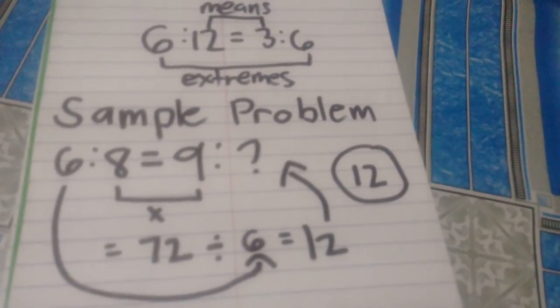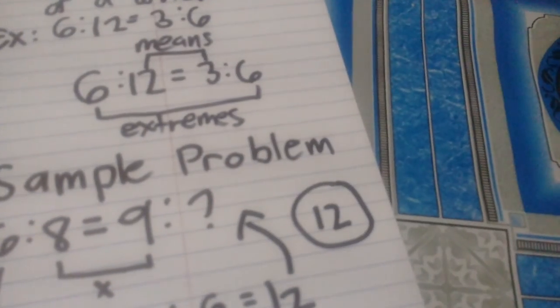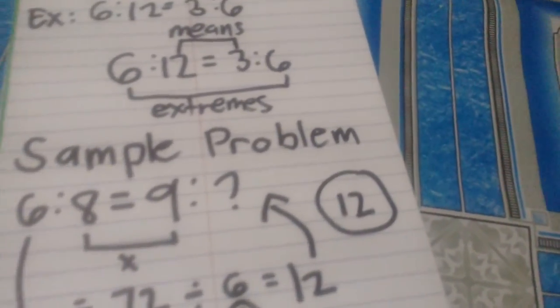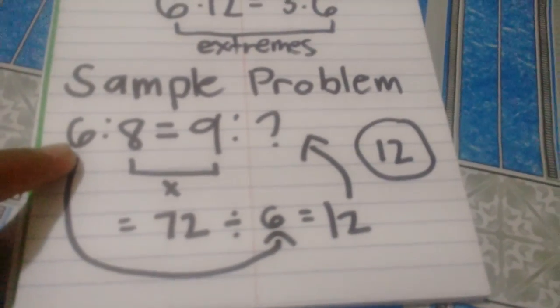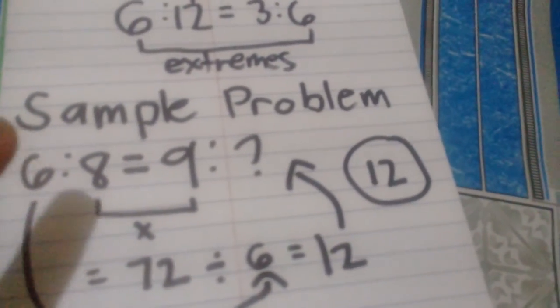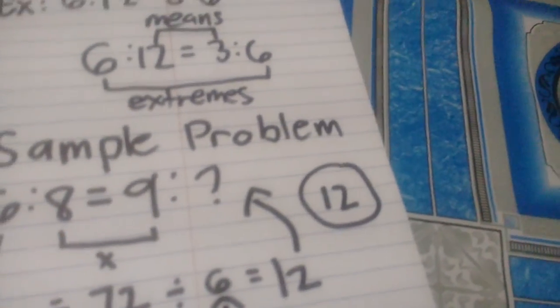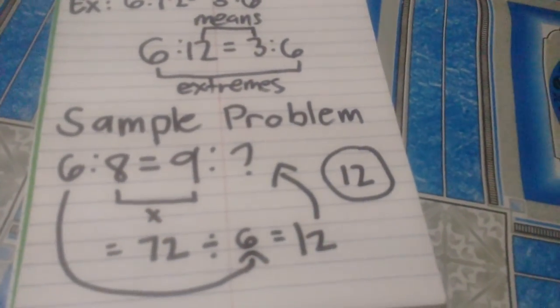If the missing number is an extreme or a mean, and the missing number is a mean, you will do exactly the same: multiply the extremes, then divide by the only present mean. After that, you will get the missing mean or number in the equation. That's how we compute for proportions and how ratio and proportions work. I hope you learned something new today. Thank you very much for listening.